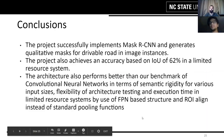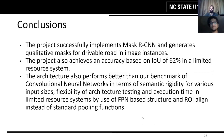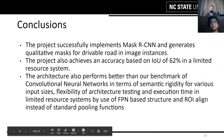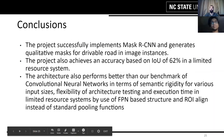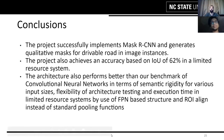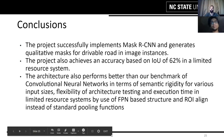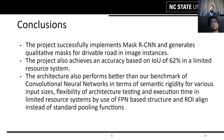Concluding our project, we have fully implemented a Mask RCNN which generates qualitative masks for drivable roads in image instances. We achieved an IOU-based accuracy of 62% in a limited resource system. The architecture outperforms our benchmark of convolutional neural networks in terms of semantic segmentation for various input sizes, flexibility of architecture, and testing and execution time in a limited resource system, by use of an FPN-based structure and ROI Align instead of standard pooling functions.